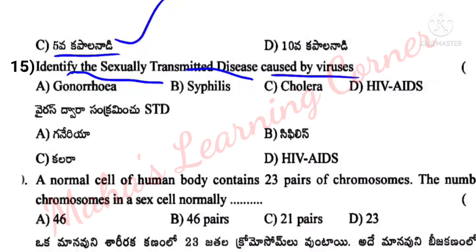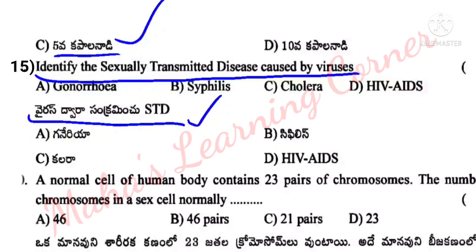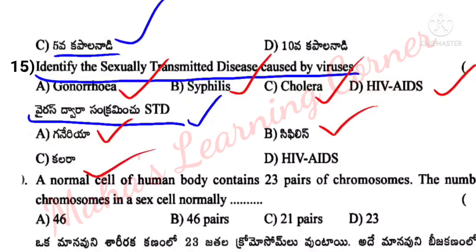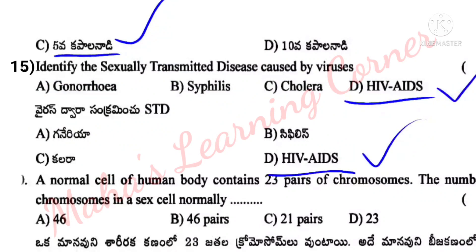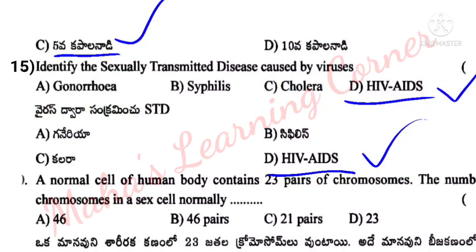Next question: Identify the sexually transmitted disease caused by viruses — STD (sexually transmitted diseases). Options: A. Gonorrhea, B. Syphilis, C. Cholera, D. HIV AIDS. Correct answer: Option D, HIV AIDS. HIV stands for Human Immunodeficiency Virus.